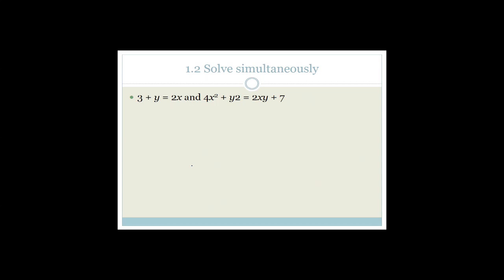Now they've asked you to solve simultaneously: 3 plus y equals 2x, and 4x squared plus y squared equals 2xy plus 7. There are a couple of ways to solve simultaneously. Since the first expression has only x's and y's while the second has x squared and y squared, we'll use substitution — solve for one variable and substitute in.